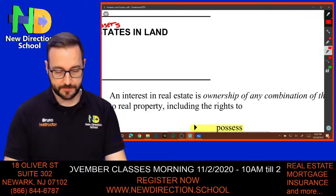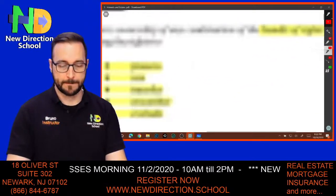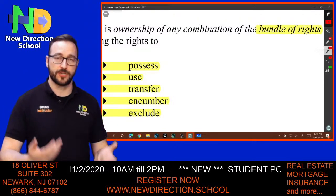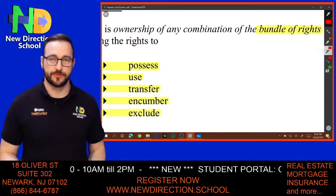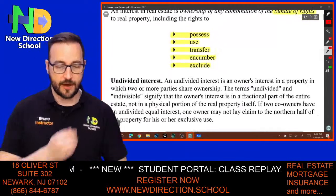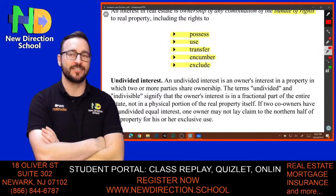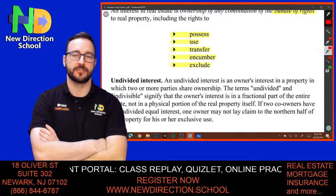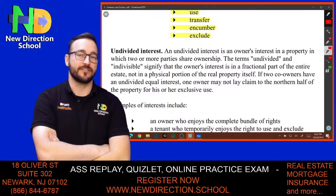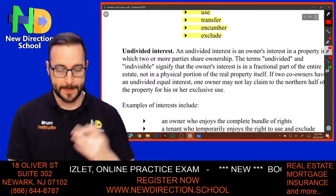We already talked about the bundle of rights: the right to possess, the right to use, the right to transfer, the right to encumber — which means putting a mortgage on the property — and the right to exclude people you don't want. An undivided interest means there's no division of it; it is an owner's interest in a property in which two or more parties share ownership.